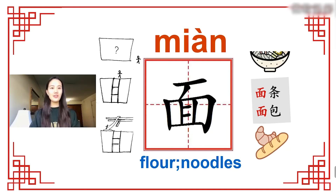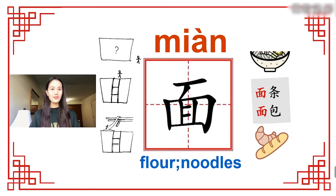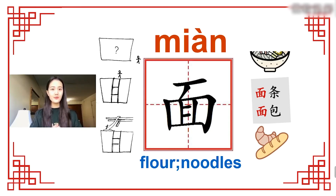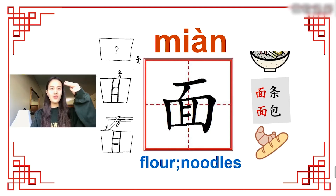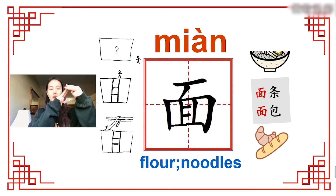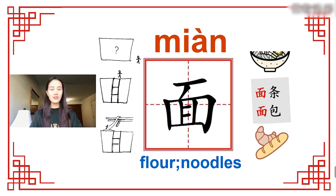Look — there is a little man wondering what's in the big cup. What does he do? Yes, he climbs up the stairs. But there's no way in, so what does he do? The chopsticks pick up the noodles so he can climb along the noodles — that's the character 面 (miàn).